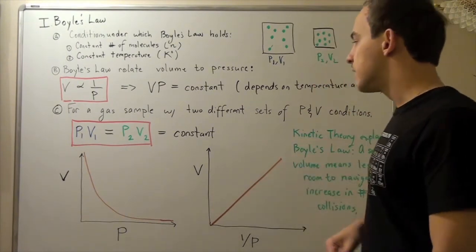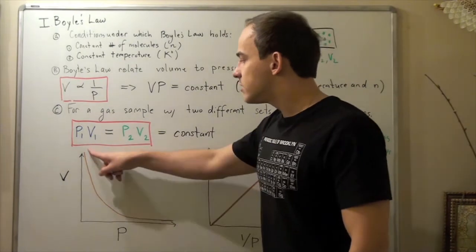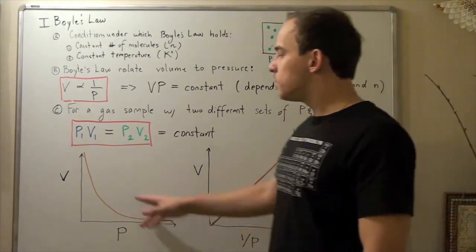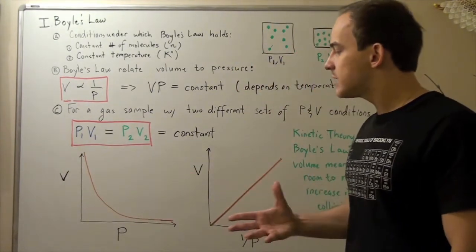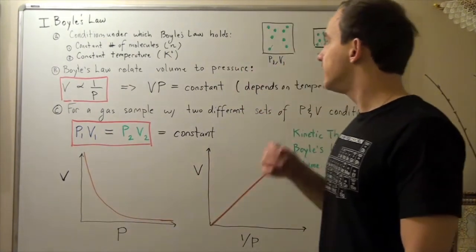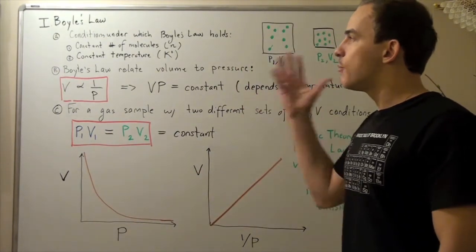The slope is constant versus on this graph, the slope varies, it changes. And if you wanted to find the slope, you would have to use calculus and approximate it using lines tangent to any point on the line.